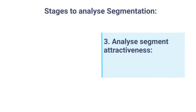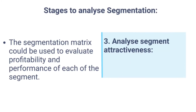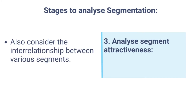The next stage is to analyze segment attractiveness. The segmentation matrix could be used to evaluate the profitability and performance of each segment. The interrelationship between various segments — such as distribution channels and similar products — must also be considered while analyzing segmental attractiveness. Segmental attractiveness could reflect higher profit, better performance, or good interrelationship between various segments.